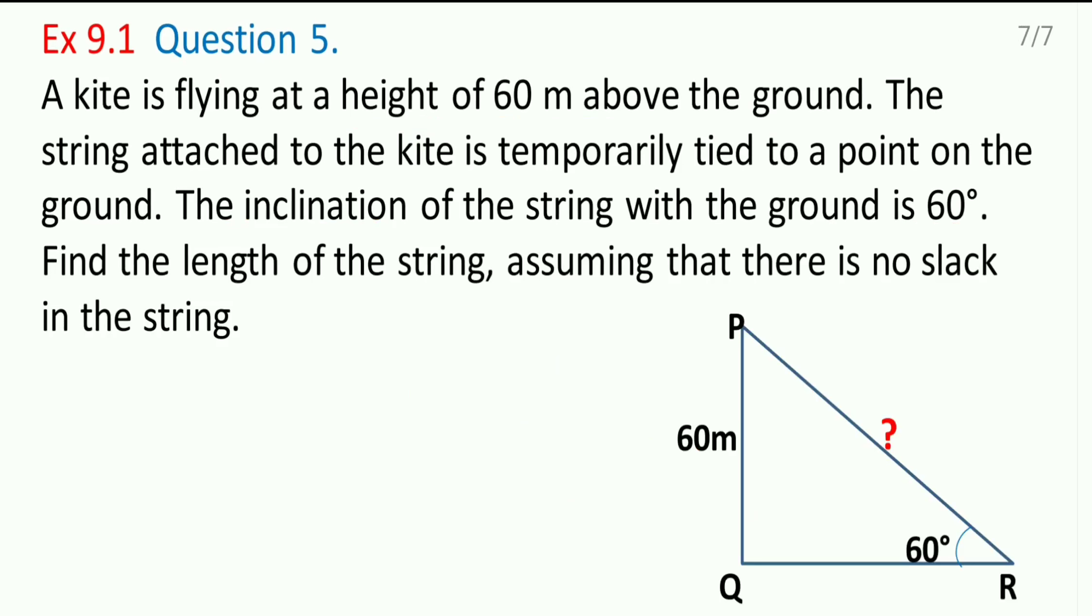Now, this is the proper figure given here. This angle will always be 90 degrees. Why? Because this PQ is the height of the kite from the ground. So it is perpendicular to the ground. We need to find out PR.